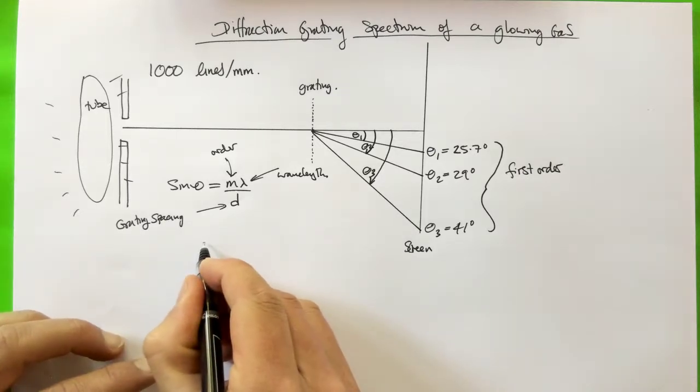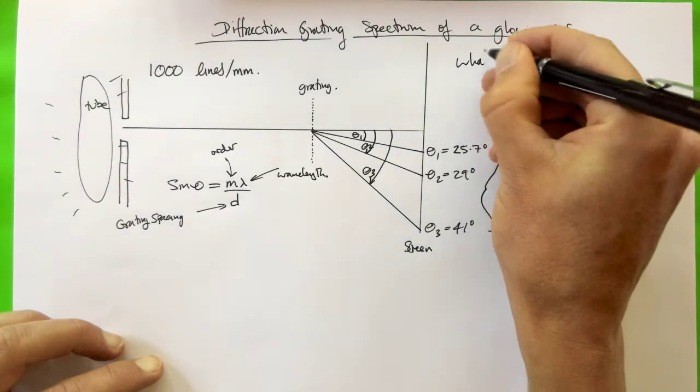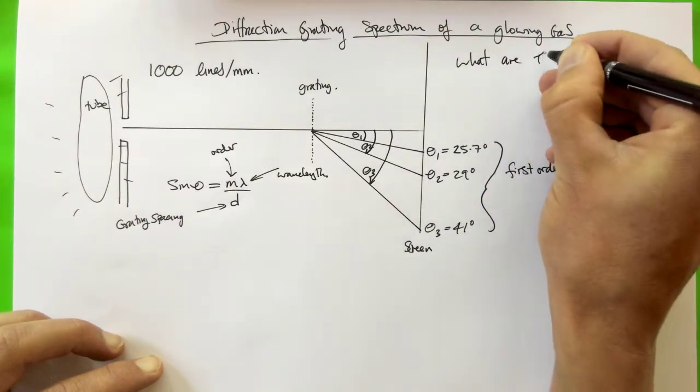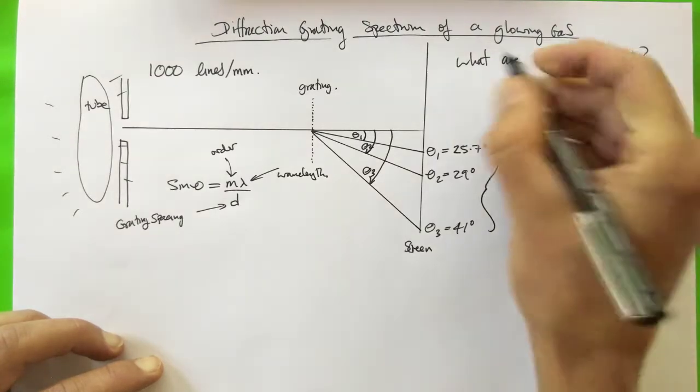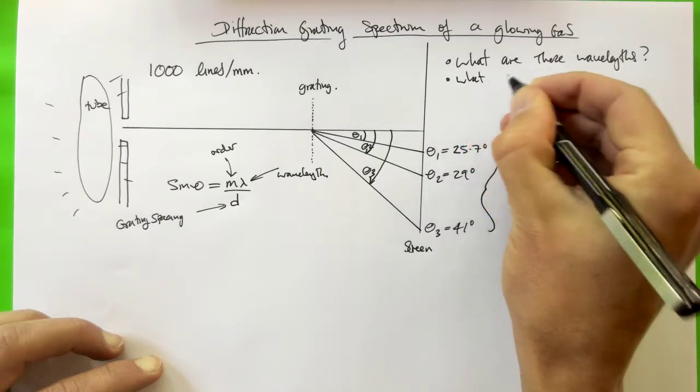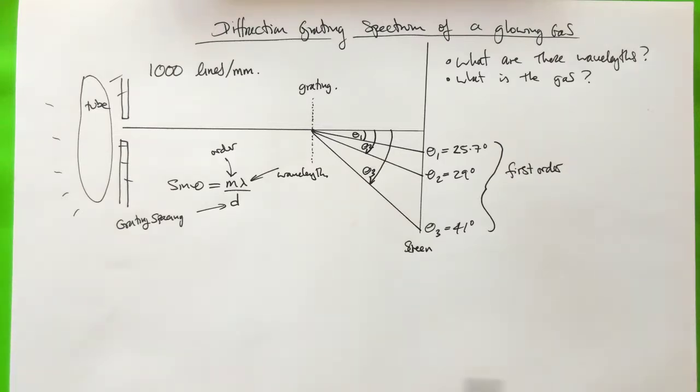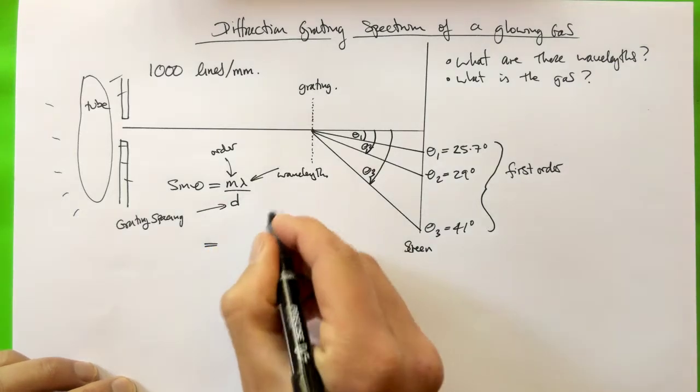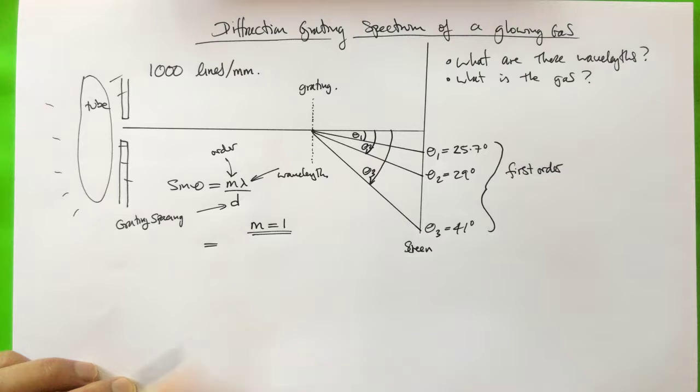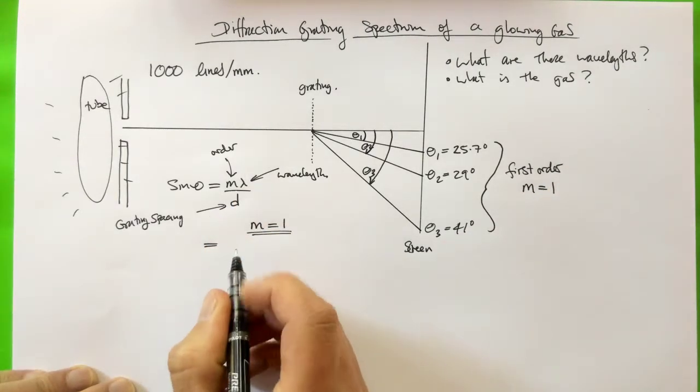So we're going to rearrange our equation, since lambda is the thing we're trying to find. That's the question. What are these wavelengths? What is the gas? So one of the primary uses of spectroscopy is to identify unknown chemicals, unknown materials. So we're going to rearrange our equation. So sine theta equals m lambda over d, and we're deciding that m equals 1. Well, we can just eliminate that, because it's 1 at this point.